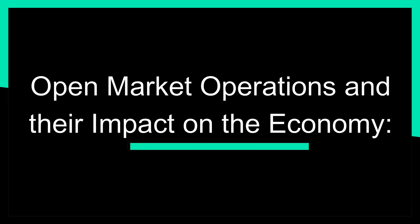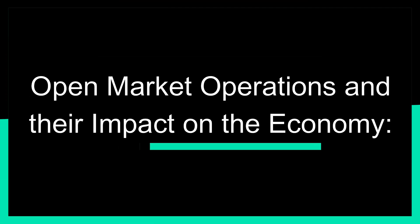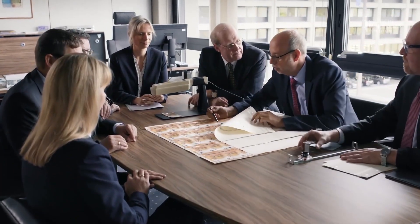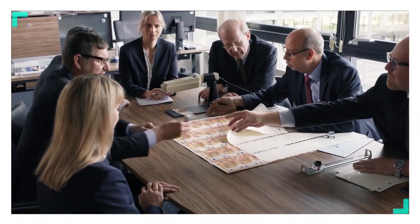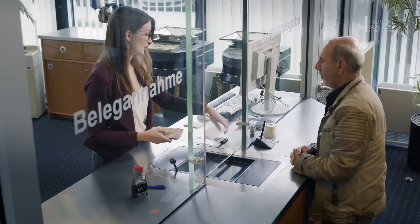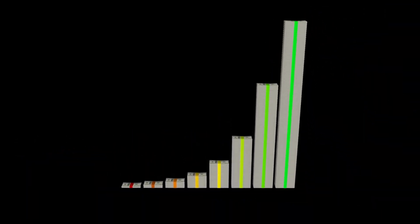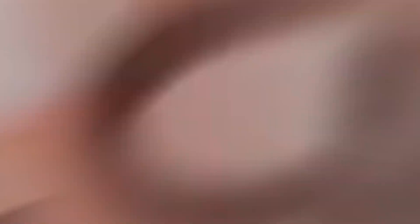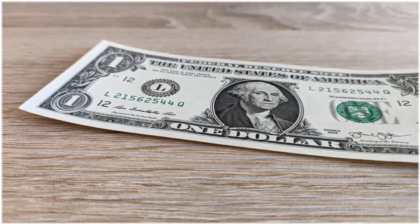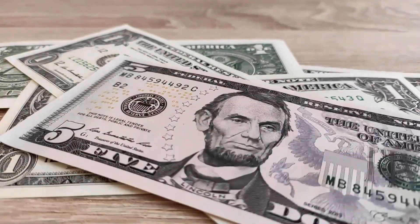Open Market Operations and Their Impact on the Economy. Open market operations involve buying and selling government securities to influence the money supply and interest rates. When central banks buy securities, they increase the money supply, lower interest rates, and stimulate economic growth. When they sell securities, they decrease the money supply, raise interest rates, and slow down the economy.